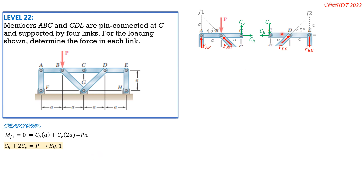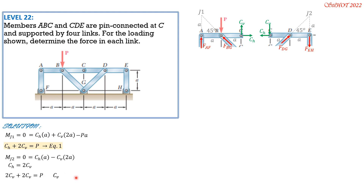In the right free body diagram, setting M_J2 equals zero, clockwise positive: C_H times A minus C_V times 2A equals zero. Canceling A gives C_H equals 2C_V. Substituting into equation 1: 2C_V plus 2C_V equals P, so C_V equals P/4 and C_H equals 2(P/4) equals P/2.